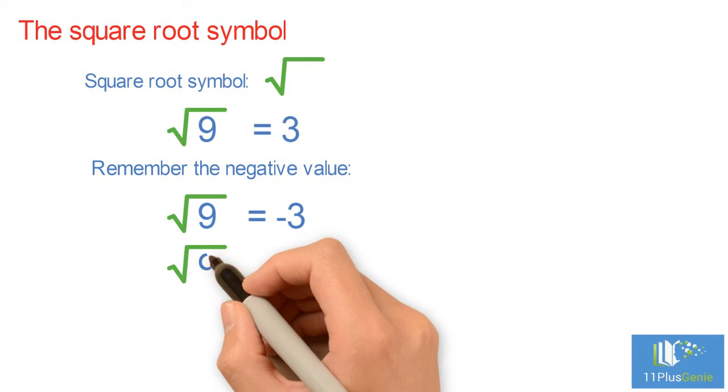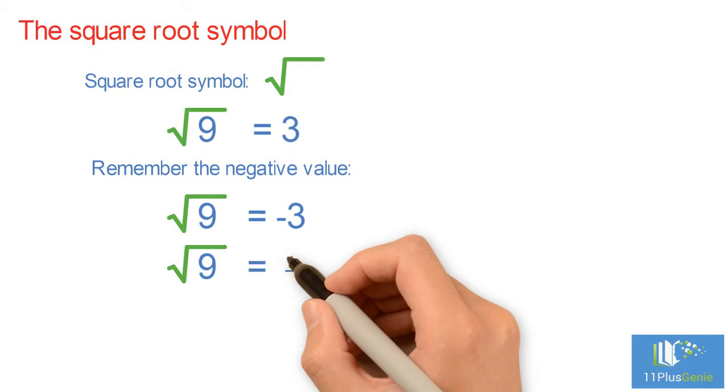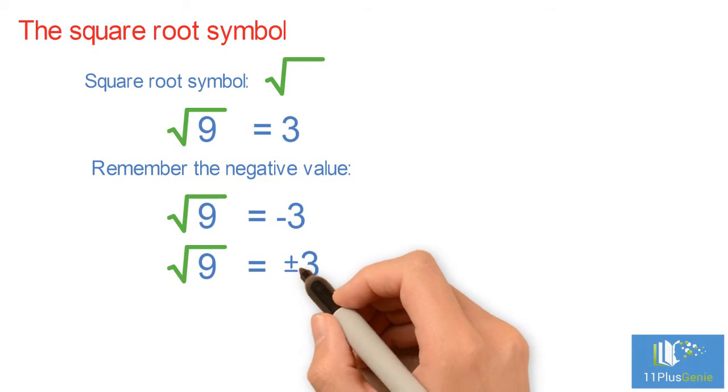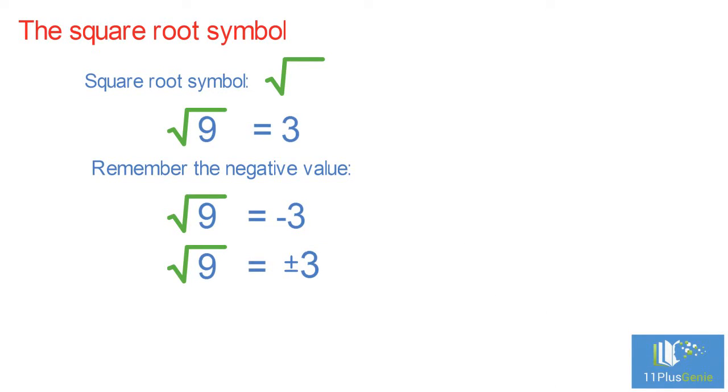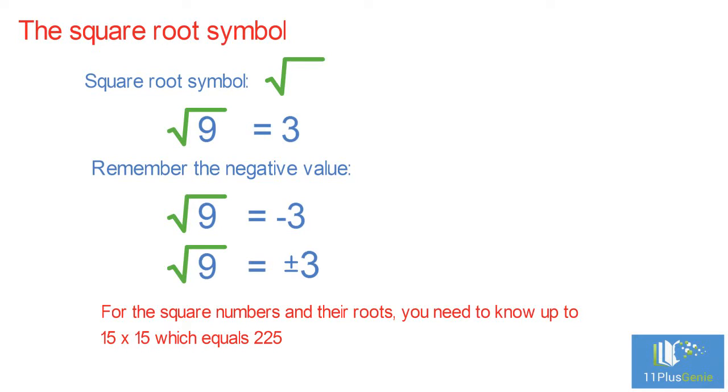Well, the square root of 9 could be minus 3 or positive 3. For the square numbers and their roots, you need to know up to 15 times 15, which equals 225.